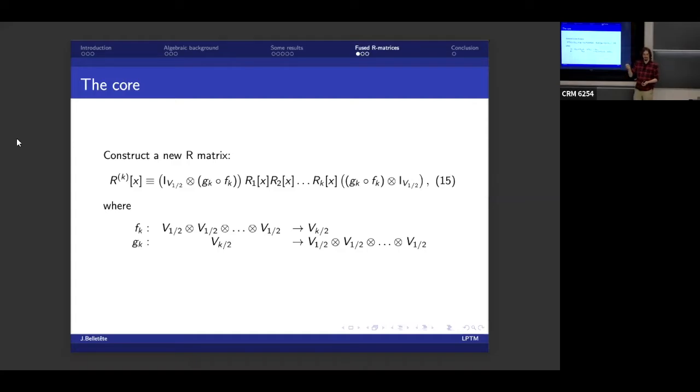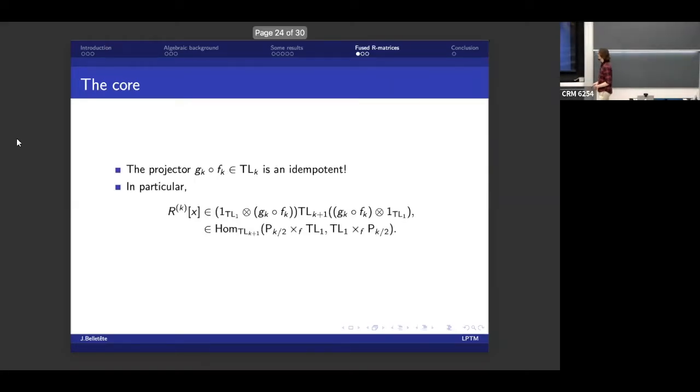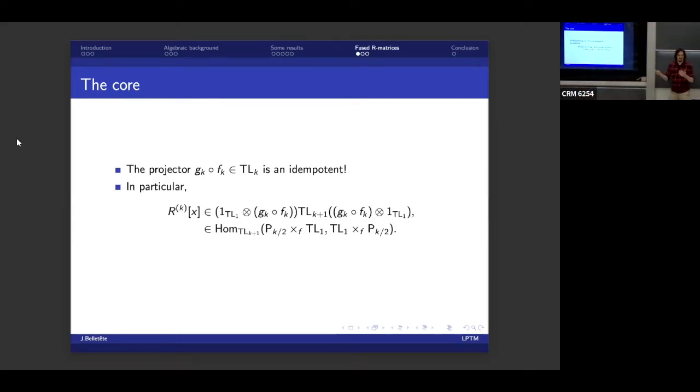So what does that mean in the algebra? Well, the projector G_k F_k, it's an idempotent. It's a projector. But as we said, all these transformations of the Hilbert space, they're in Temperley-Lieb. So this projector really is an idempotent in TL_k. So really, my R matrix, it's an element of this space. My two idempotents with Temperley-Lieb in the middle.